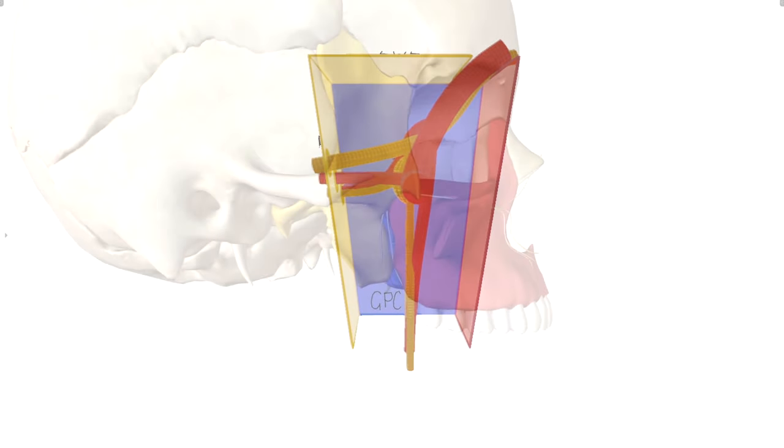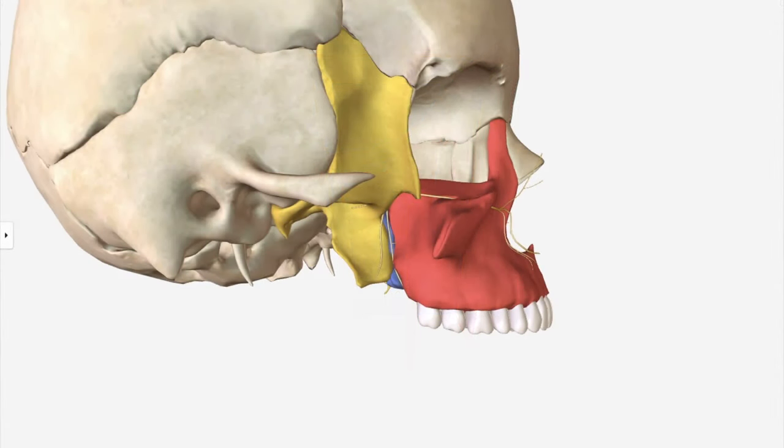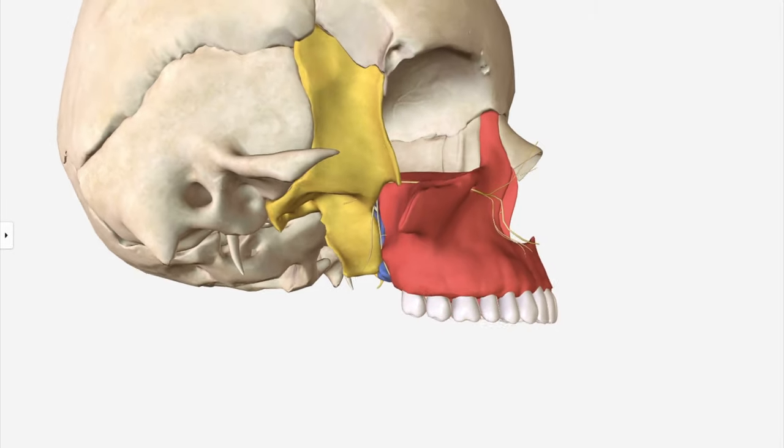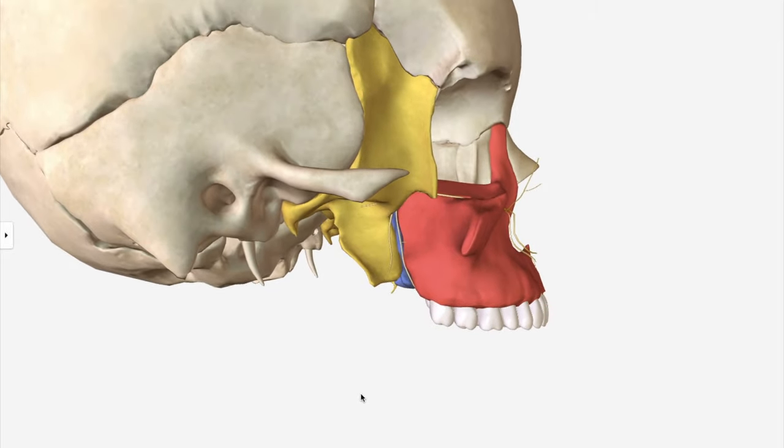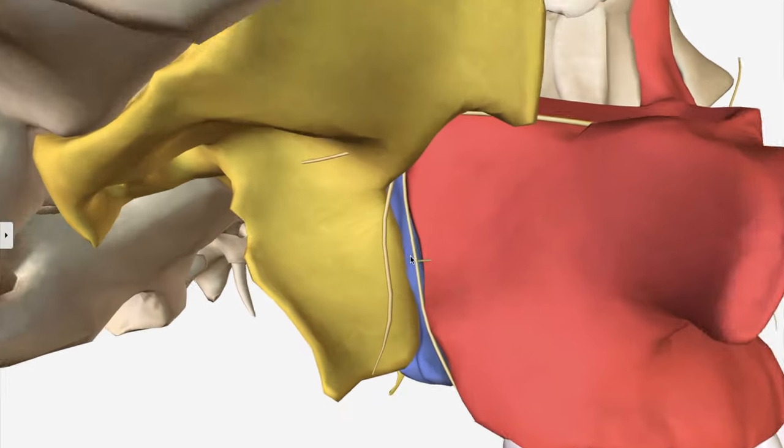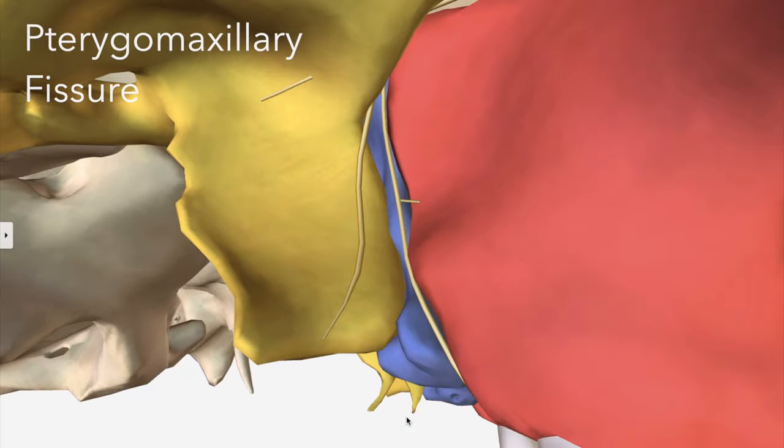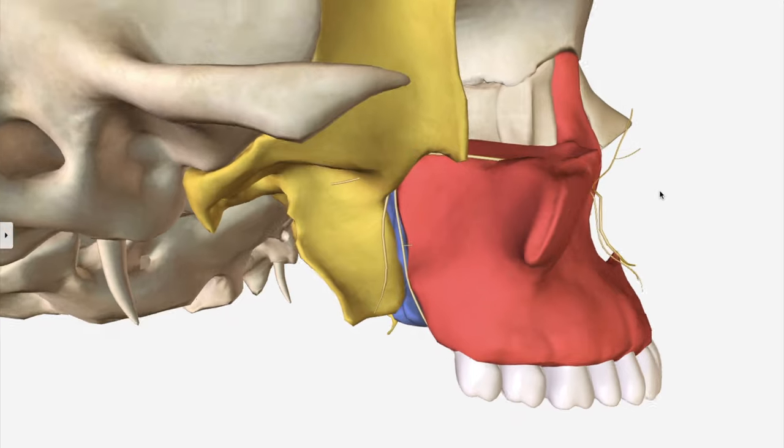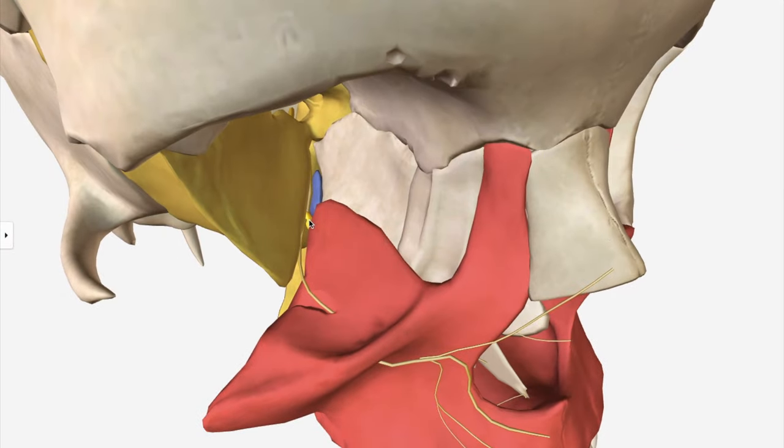For now, let's reintroduce our skull model to ground what we've learnt in the true anatomy. So here we have the entrance to the pterygopalatine fossa. We're looking through the pterygomaxillary fissure. And the pterygopalatine ganglion is our centrepiece here.